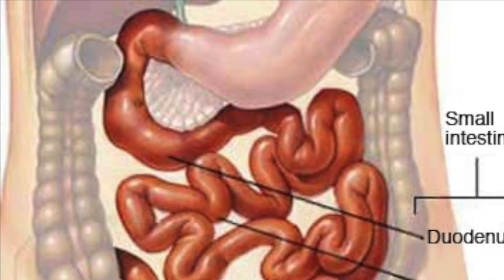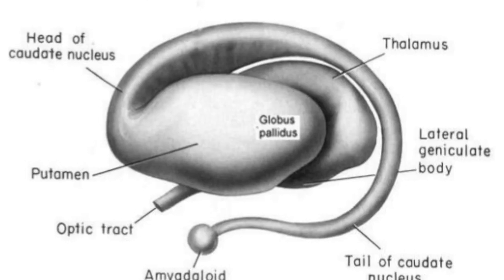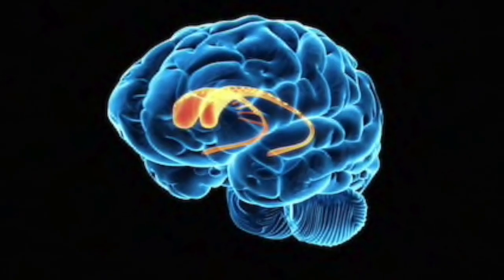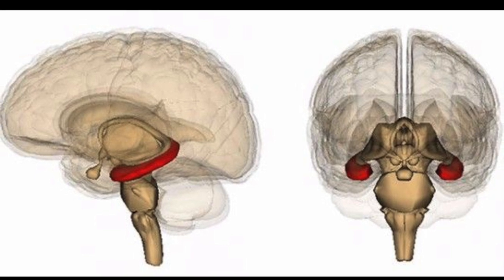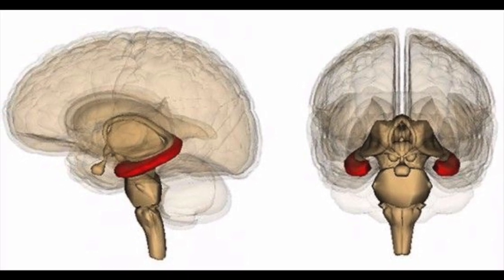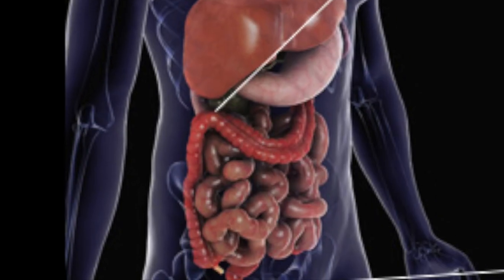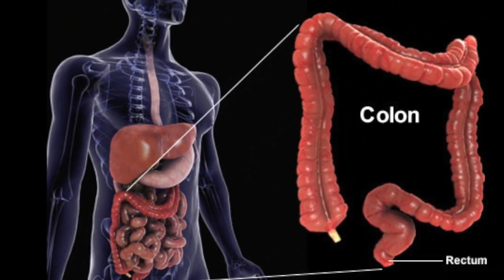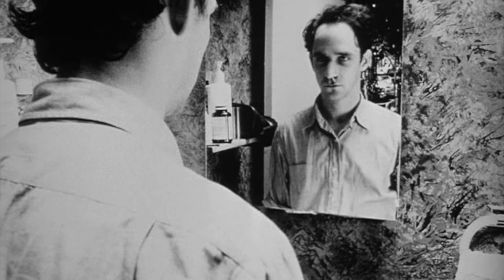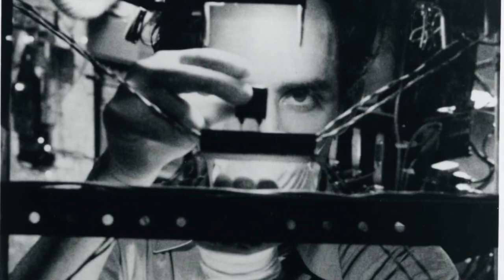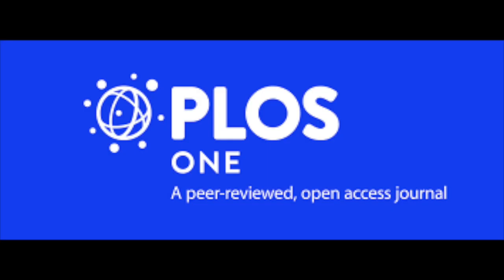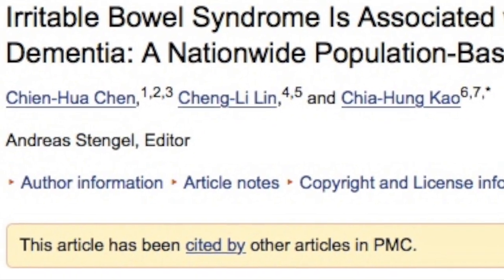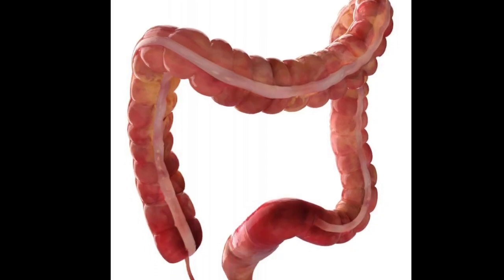Following the stomach, we have the small intestine. If we follow the putamen through the caudate nucleus, we'll find a structure called the hippocampus. For this reason, I believe the hippocampus could be a counterpart of the small intestine. After the small intestine, we have the colon. I believe the counterpart of the colon is probably the most famous part of the brain — the cerebrum. A study published in PLOS ONE by Xianhua Chen, Cheng Li Ling, and Xia Hongkau has shown a correlation between irritable bowel syndrome and dementia.